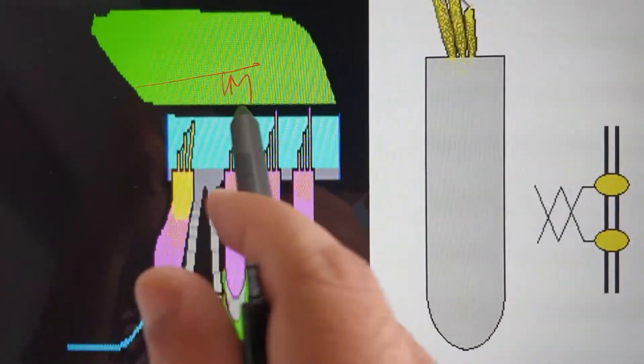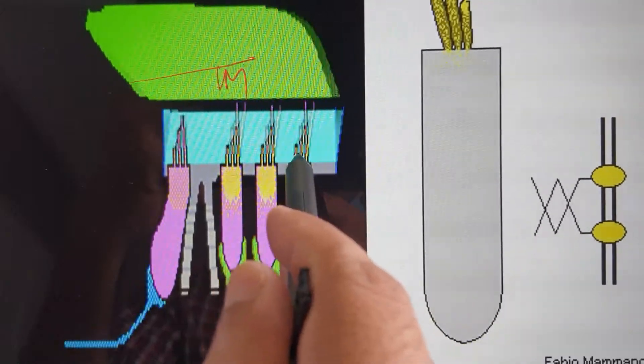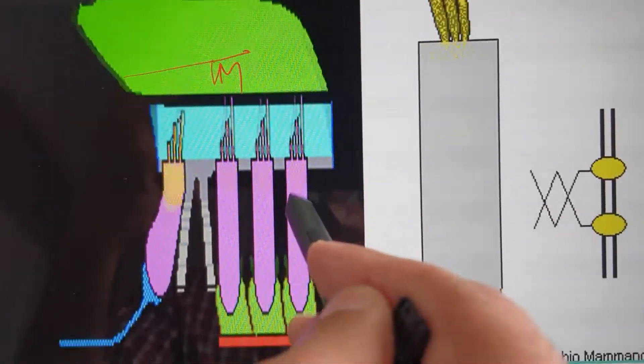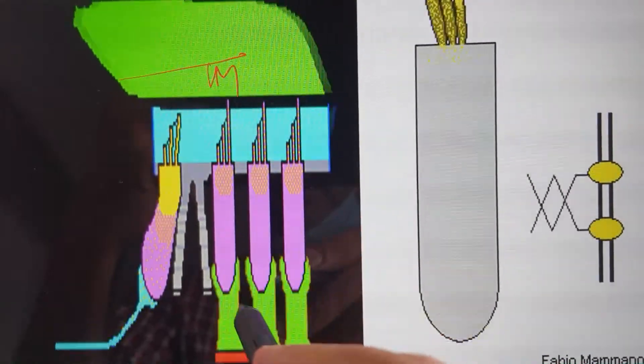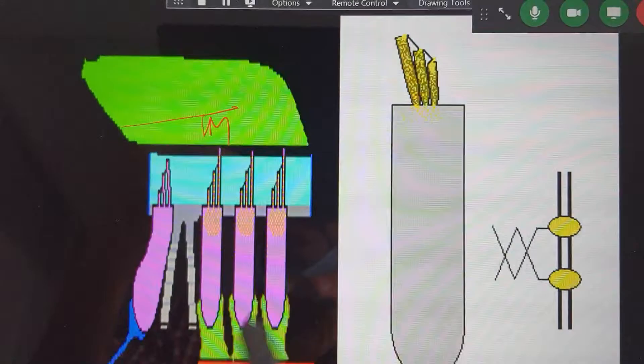This is showing the tectorial membrane, which you should be keeping in mind. When it is moving, the shearing force leads to this: this is the kinocilium, these are the stereocilia. Potassium goes inside and calcium also goes inside, vesicles get broken, and then they generate the nerve impulse. That is a depolarization cycle.